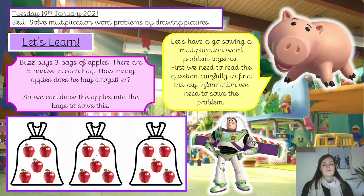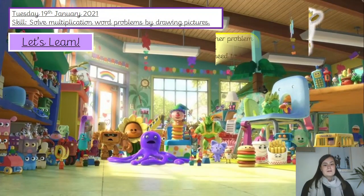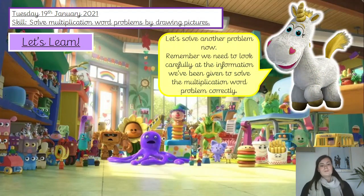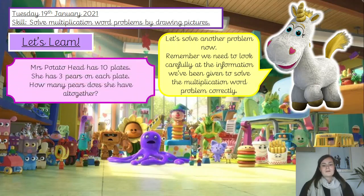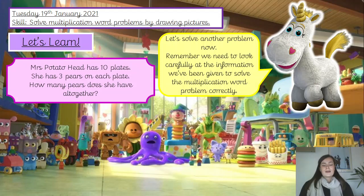I'd like you to have a go at this one. You don't need to write anything down. I'm going to ask you to pause the video so you can have a little chat about this one before I show you the answer. Let's solve another word problem. Remember, we need to look carefully at the information we've been given. Mrs Potato Head has ten plates. She has three pairs on each plate. How many pairs does she have altogether? Pause the video and double-check you understand what this question is asking you to do.